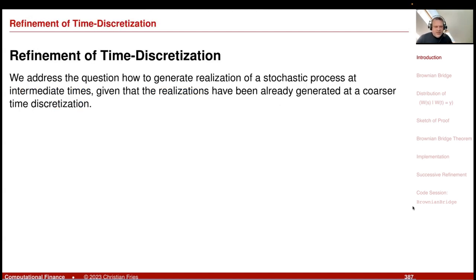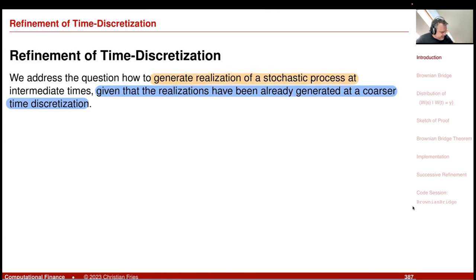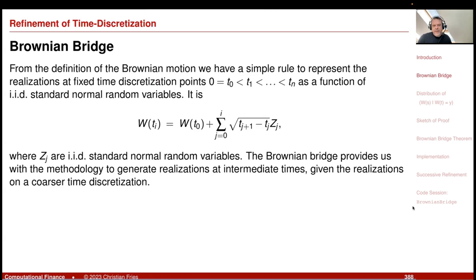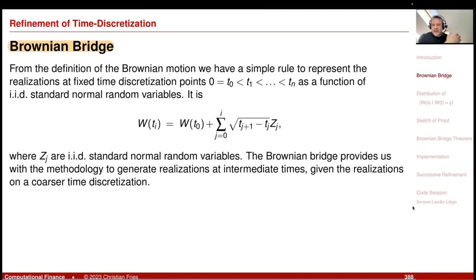The situation is that we have given realizations already generated on some coarser time discretization, and we would like to simulate the stochastic process at intermediate times. I will discuss this for the Brownian motion, because then you can construct the corresponding Euler scheme in between — this is quite straightforward. The corresponding Brownian motion that performs this is called the Brownian bridge, because it bridges from a given start value to a prescribed end value.